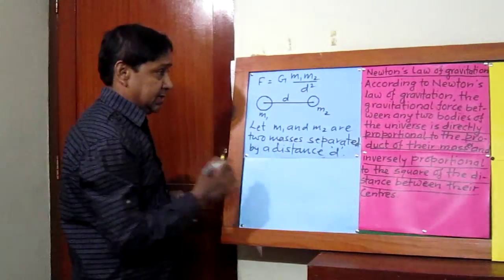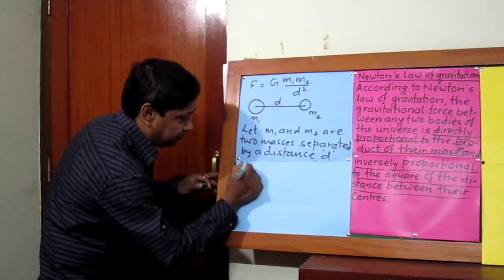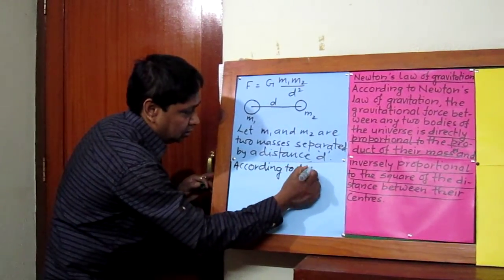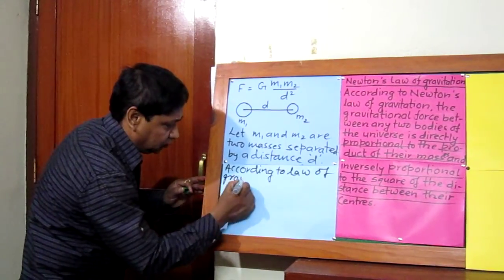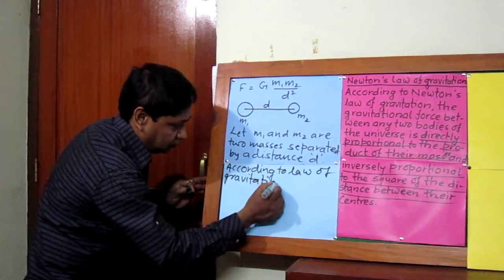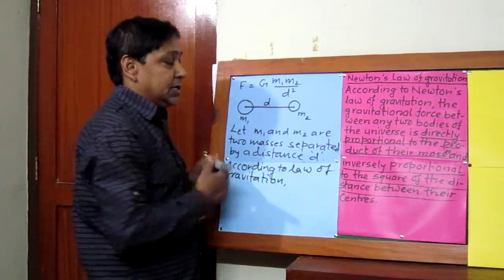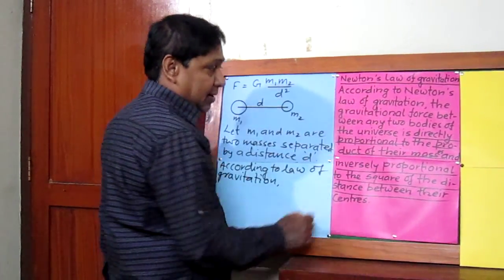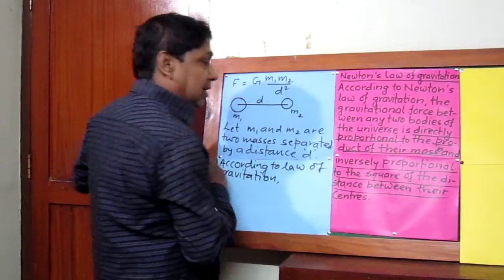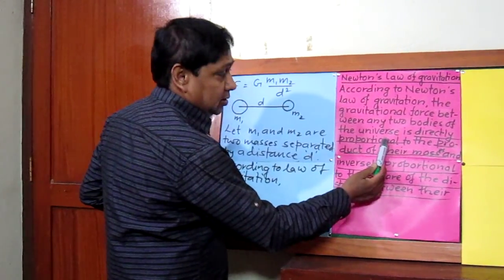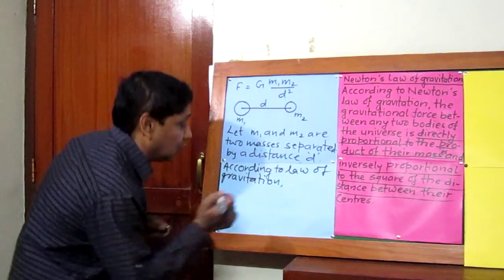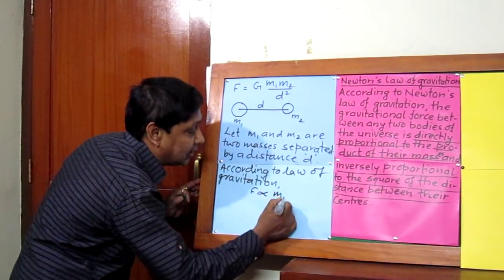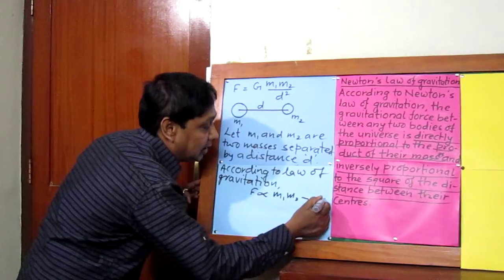Now look at the law of gravitation. According to the law of gravitation, we can understand two points very clearly. The first point is: the gravitational force between two bodies is directly proportional to the product of their masses. So gravitational force F is directly proportional to m1 times m2. This is equation number one.